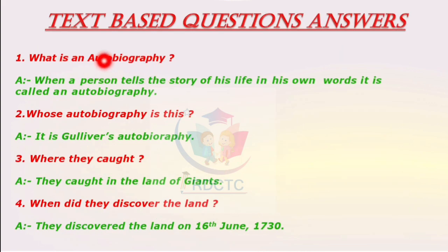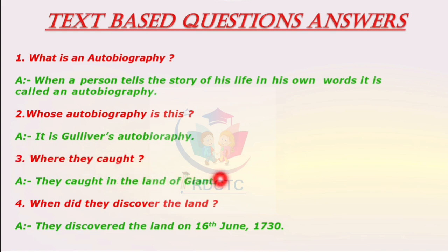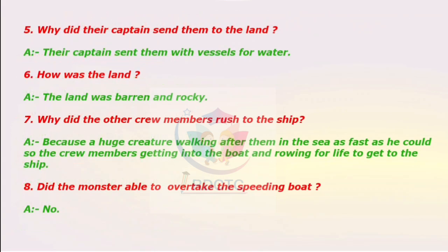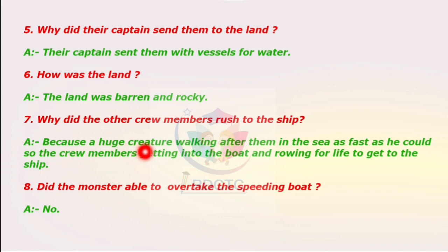Text-based question answers. What is an autobiography? When a person tells the story of his life in his own words, it is called an autobiography. Whose autobiography is this? It is Gulliver's autobiography. Where were they caught? They were caught in the land of giants. When did they discover the land? They discovered the land on 16th June 1730. Why did their captain send them to the land? Their captain sent them with vessels for water. How was the land? The land was barren and rocky. Why did the other crew members rush to the ship? Because a huge creature was walking after them in the sea as fast as he could, so the crew members got into the boat and rowed for life to get to the ship.